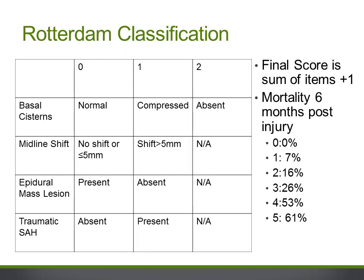The Rotterdam classification is simpler and avoids the inability to classify patients with multiple injury types, as the system awards points based on degree of abnormality in each of four independent features and then adds these up to determine an overall score, which can then be used to predict mortality rate at six months post-injury. The features that the system considers include basal cisterns, midline shift, epidural collection, and subarachnoid hemorrhage.